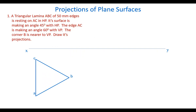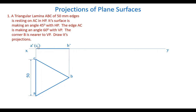Now the triangle is constructed and dimensions are shown. Draw projectors from all the points and draw the front view — it's a straight line because the plane is in the horizontal plane. Mark the corresponding points in the front view: A dash, B dash, C dash. C is away from the observer, so C dash is shown in brackets.